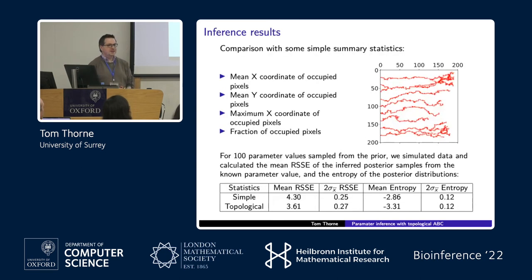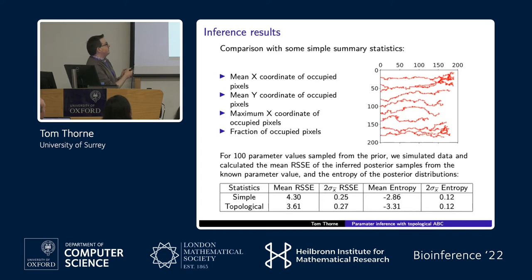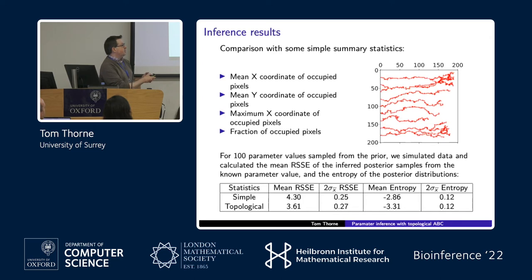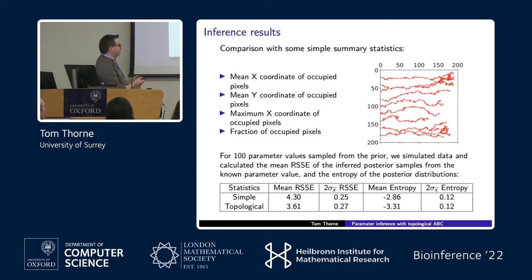To double-check this, we also ran the same procedure for 100 samples from the prior using simple statistics: mean x coordinate, mean y coordinate, maximum x coordinate, and fraction of occupied pixels in the binary image. Comparing the posteriors learned using those simple statistics with the topological ones, we found that the mean root sum of squared errors using the simple statistics is higher than using the topological ones, and the mean entropy for the topological statistics is lower — meaning the posterior is more tightly focused around the true parameter values.